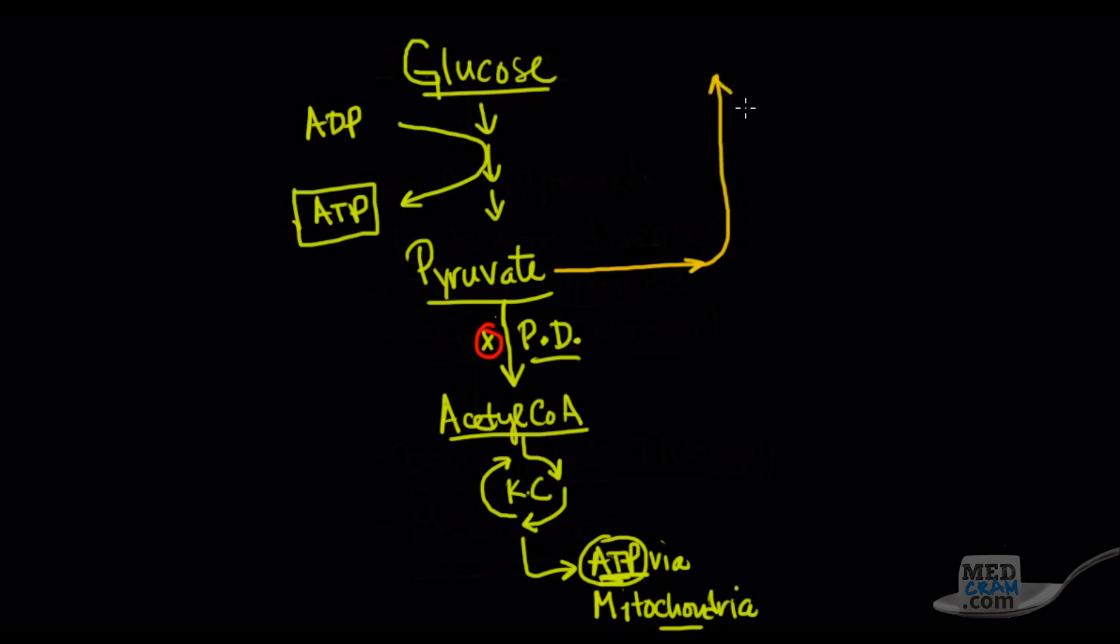The thing I haven't shown you here is that glycolysis also takes something called NAD+, which is very important, and converts NAD+ into NADH. That's a reducing agent. And this NADH can actually also go to the electron transport chain and create ATP.